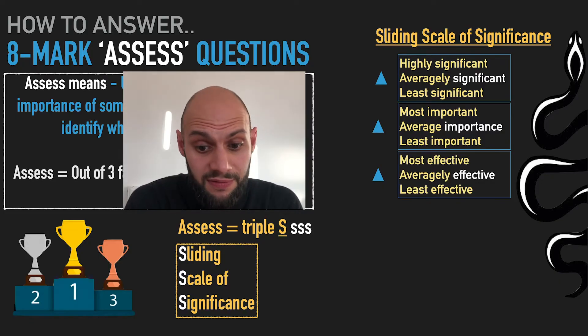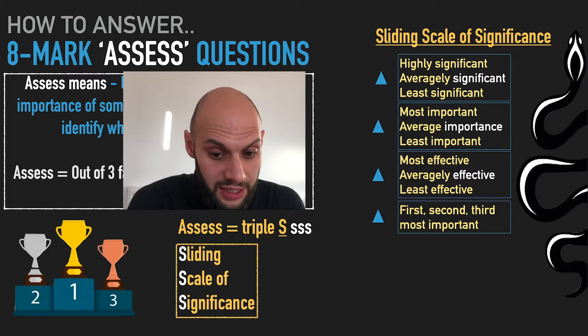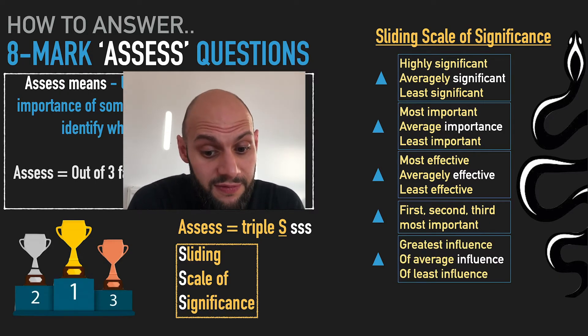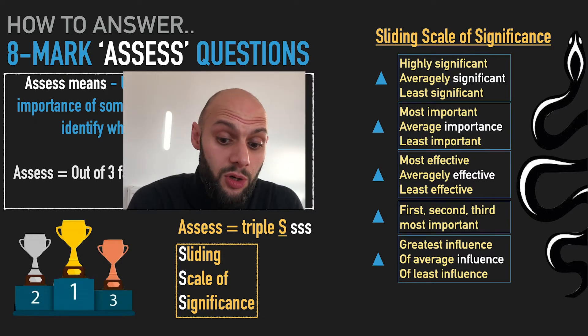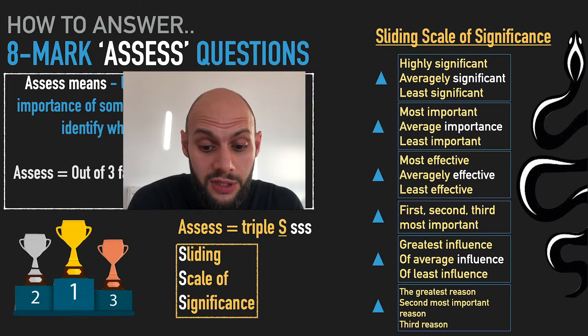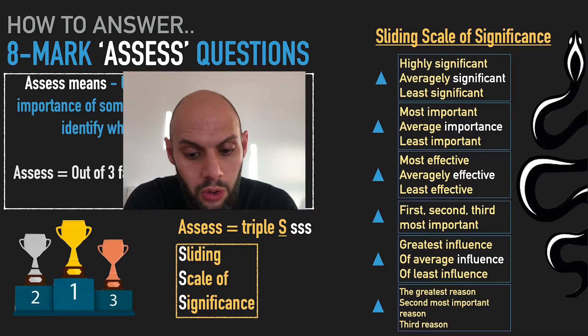You could do most effective, averagely effective, least effective factor. First, second, third most important factor. Greatest influence, average influence, least influence, or for example you could do the greatest reason or the second most important reason or the third reason.